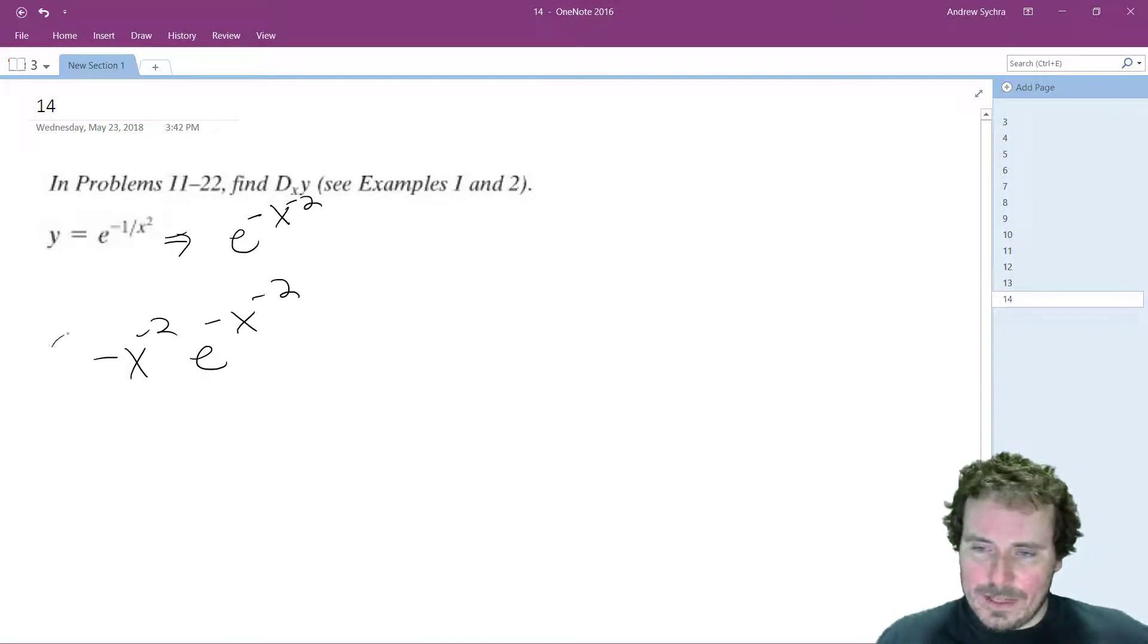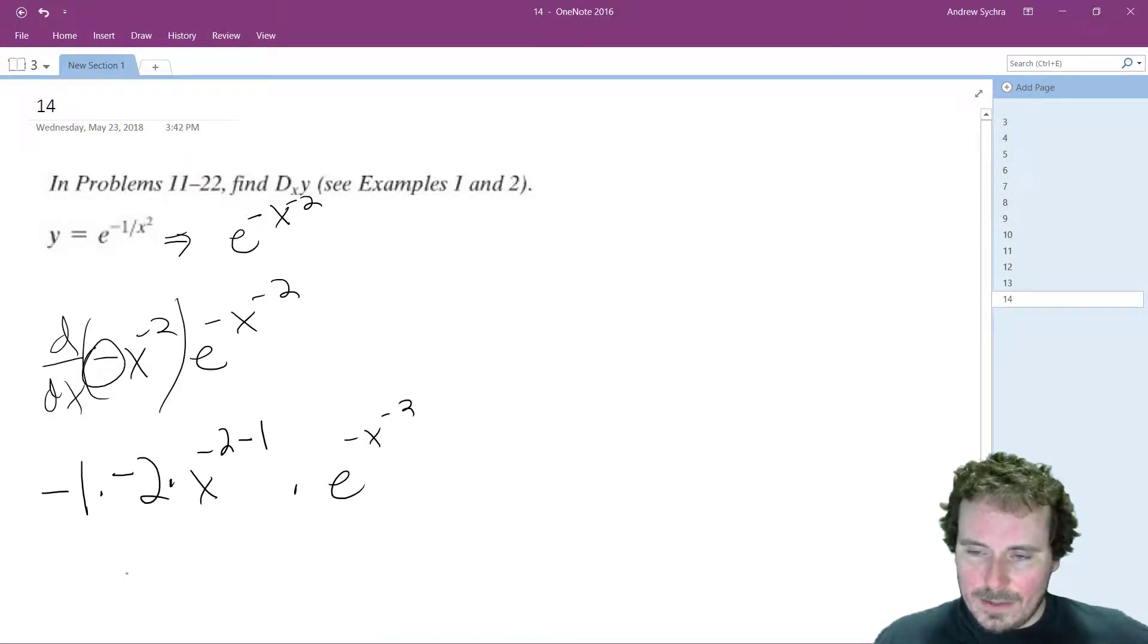So the derivative, we take the derivative of what we pulled down here. What we end up with is negative 1, which is the original coefficient, times negative 2 times x raised to negative 2 minus 1 because we're deriving it, and then times e raised to the negative x minus 2.